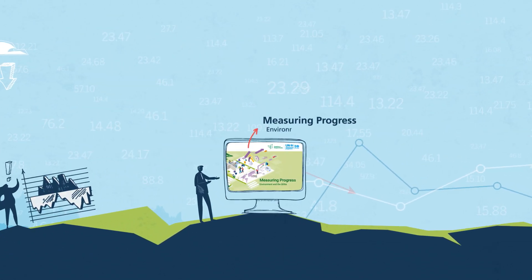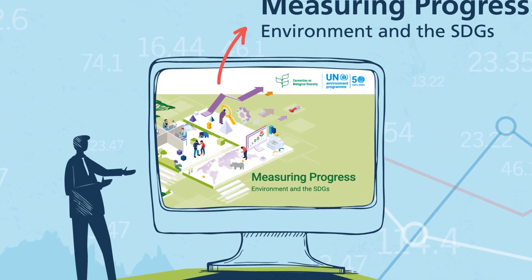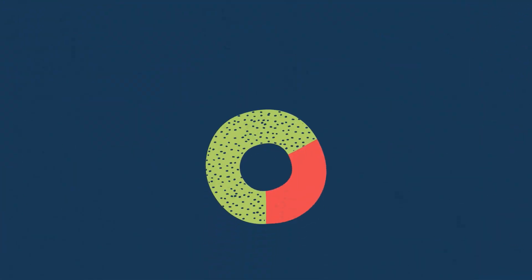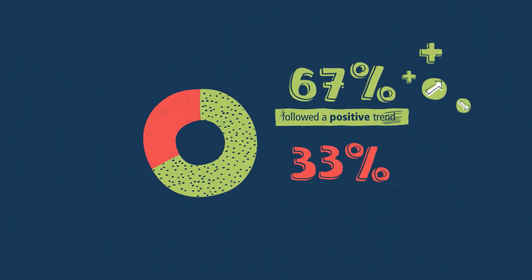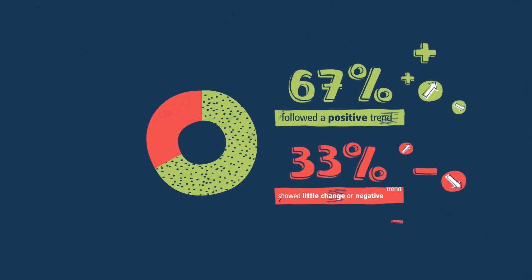The Measuring Progress, Environment and the SDGs report shows that out of the total environmental indicators with data, 67% followed a positive trend and 33% showed little change or negative trend.